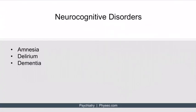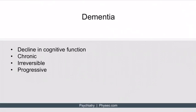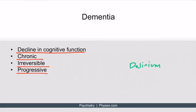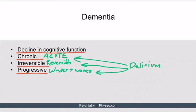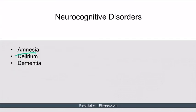Delirium can look a lot like dementia, so it's very important to distinguish the two. Dementia is a decline in cognitive function that is chronic, irreversible, and progressive — in stark contrast to delirium. Delirium is acute, reversible, and waxes and wanes; it is not progressive. Distinguishing the two matters because your approach to treatment will be very different.